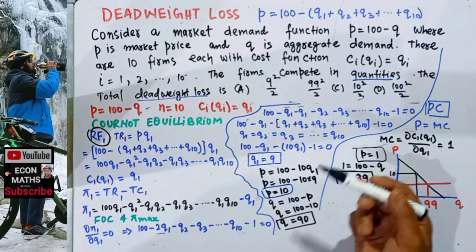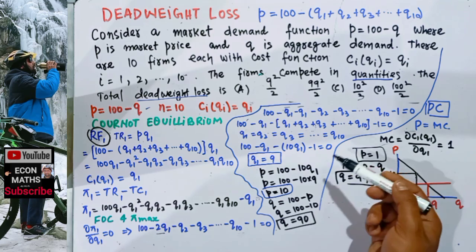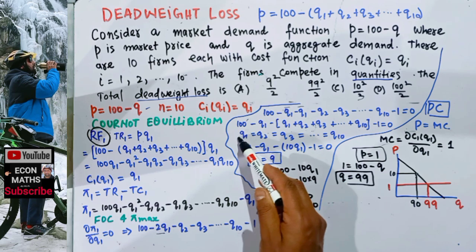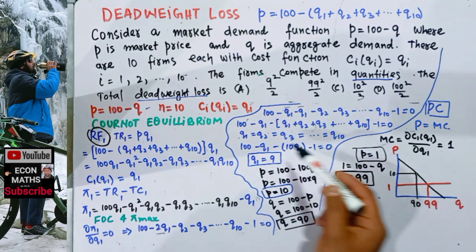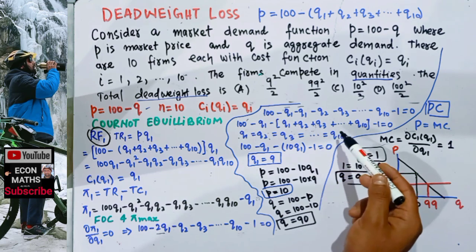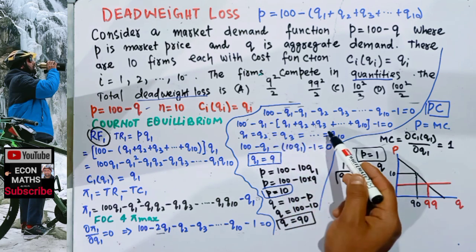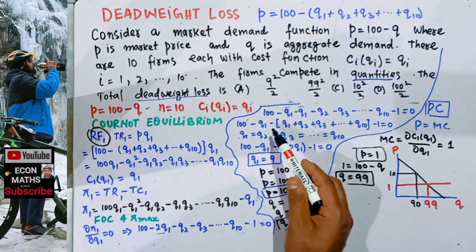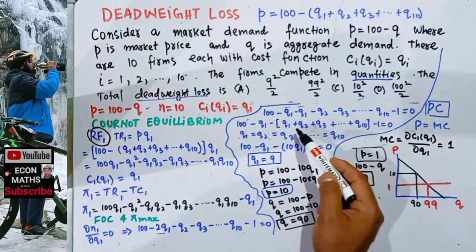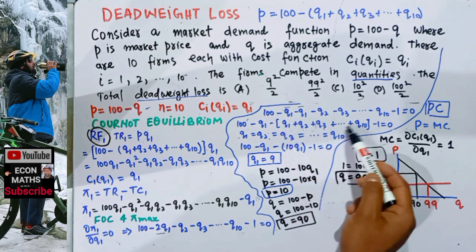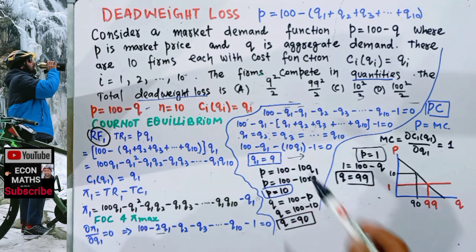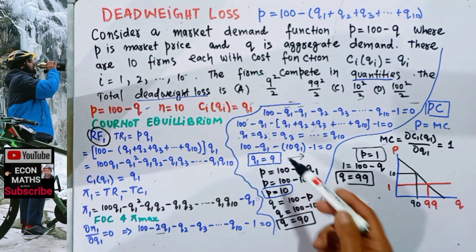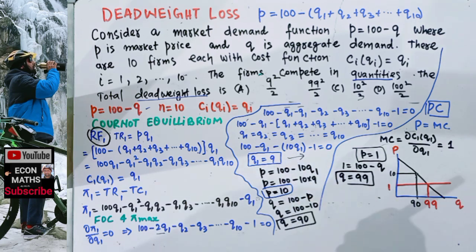Since we have 10 firms each with the same cost function, the output produced by each firm in Cournot competition will be the same: Q1 = Q2 = Q3 = ... = Q10. Substituting this symmetry into the first-order condition: 100 - 2Q1 - 9Q1 - 1 = 0, which gives 100 - 11Q1 - 1 = 0. Solving for Q1, we get Q1 = 9. So each firm produces an output of 9.